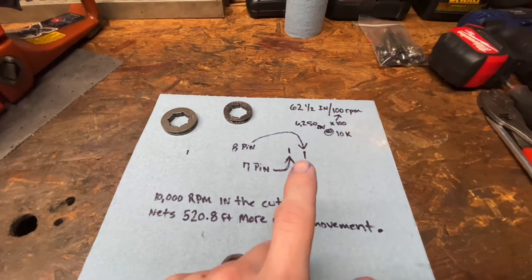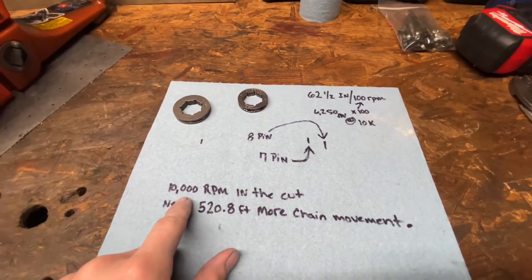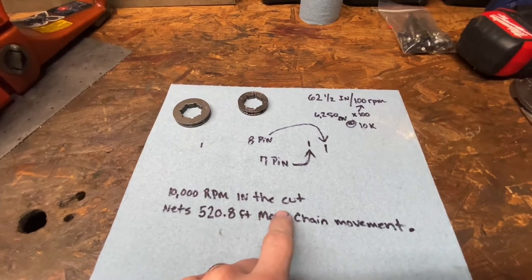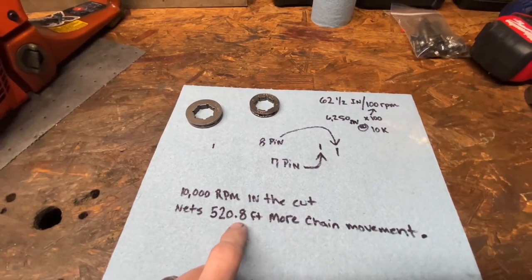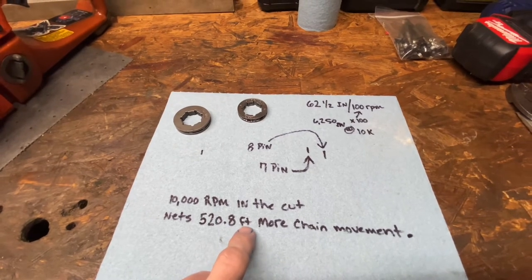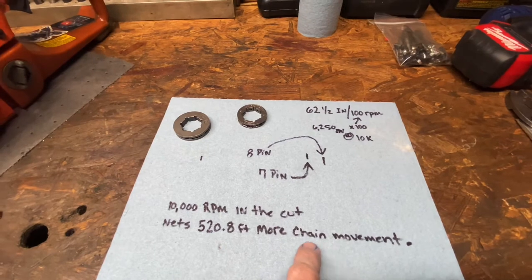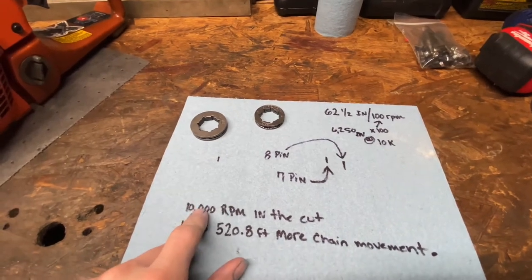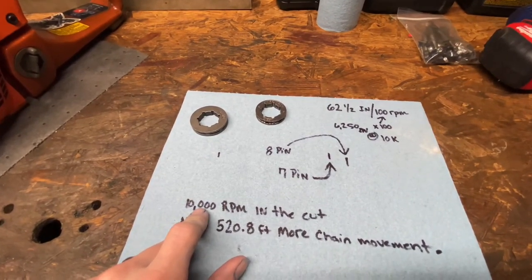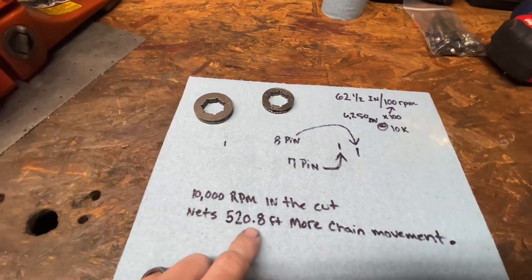So you turn 62.50 into feet at 10,000 RPMs in the cut, 520.8 more feet of chain movement at 10,000 RPMs. That's a whole lot, it's a whole lot faster.